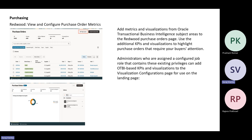Another functionality introduced as part of 25D on the Redwood side is to view and configure purchase order metrics. Using metrics and visualizations from Oracle Transactional Business Intelligence Subject Area, you can add metrics into your layout. Administrators need certain privileges; once they have those privileges, they can edit the page layout and add metrics to the existing set. For example, 'pending acknowledgement by supplier' has been added as part of the metrics on the purchase order landing page.